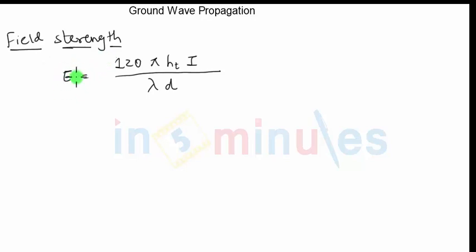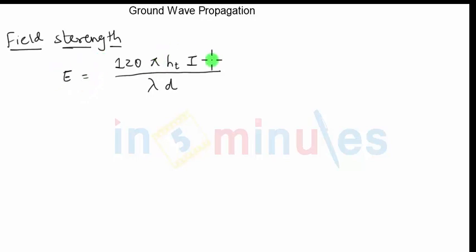Please note that when E keeps on reducing, that means the ground wave is dying out. When E becomes zero, the ground wave is completely not available anymore. So you can see that E is directly proportional to few factors and inversely proportional to few factors. E is the field strength measured in volts per meter.